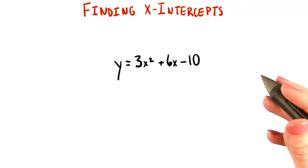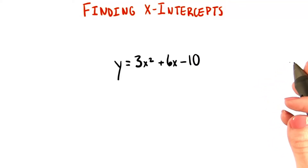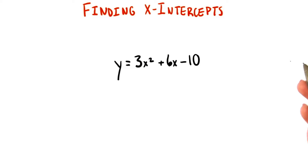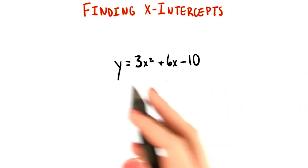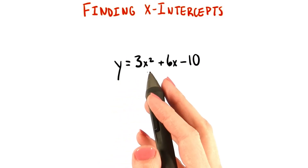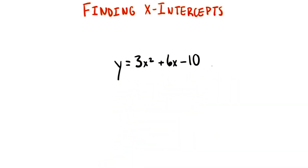We're starting to see that some equations for parabolas can't be factored. When that's the case, we need another method for finding where they intersect the horizontal axis. Let's look at this equation: y equals 3x squared plus 6x minus 10.